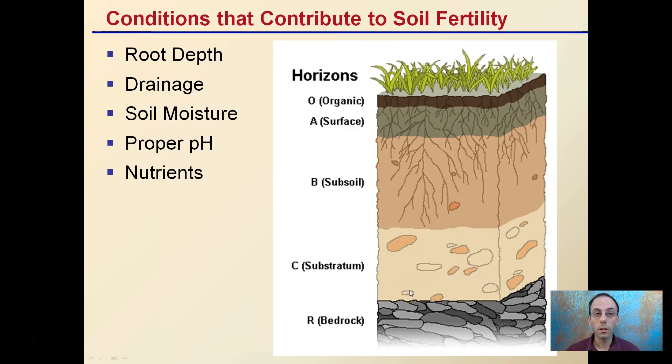There are several conditions that contribute to soil fertility, such as root depth, drainage, soil moisture, proper pH, and nutrients. This gives you just a little bit of the soil profile and the horizons.